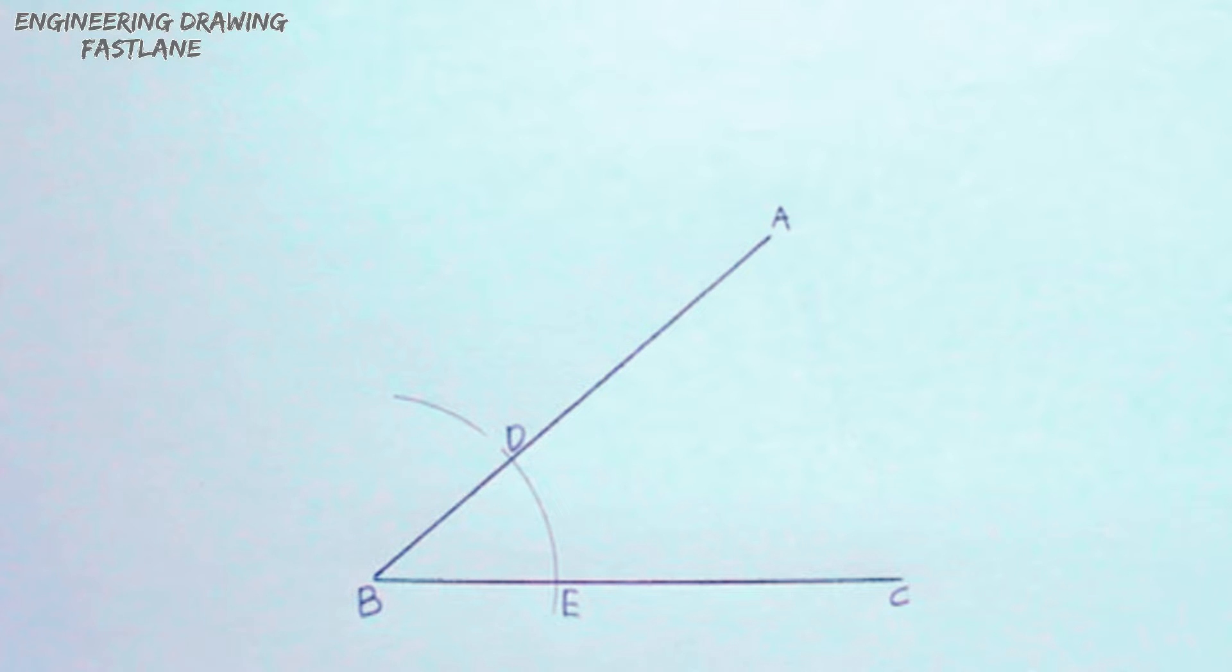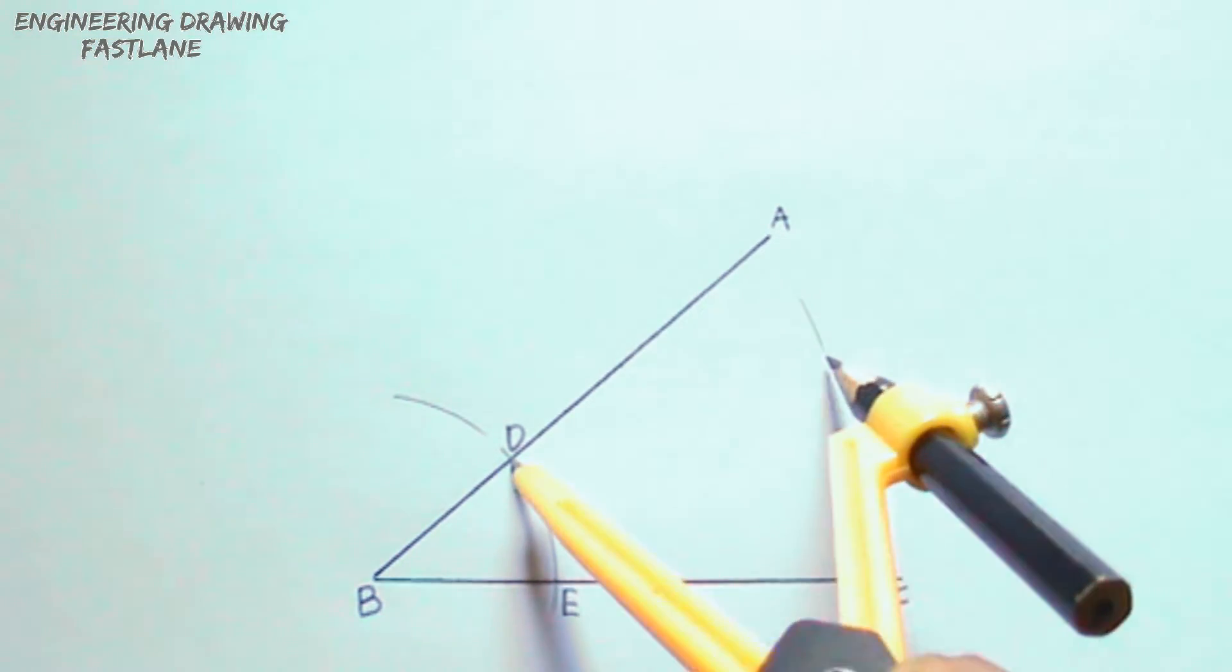With D and E as centers, draw two arcs to intersect at a point. The arcs may be drawn with any convenient radius and should be drawn with thin chain lines.